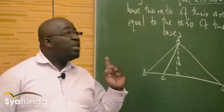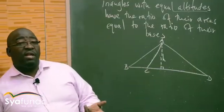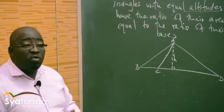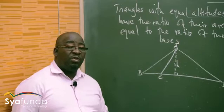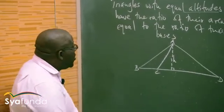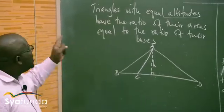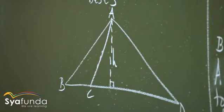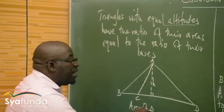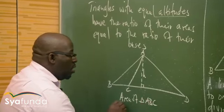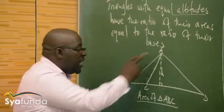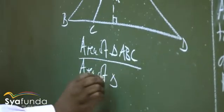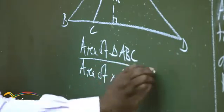The area of a triangle is half base times perpendicular height — if you have a perpendicular height at 90 degrees. If you don't have a perpendicular height, we use trigonometry, the triangle formula. This theorem says triangles with equal altitudes have the ratio of their areas equal to the ratio of their bases. So: area of triangle ABC over area of triangle ACD equals the ratio of their bases. The base of triangle ABC is BC, and the base of triangle ACD is CD.